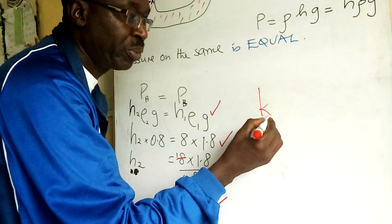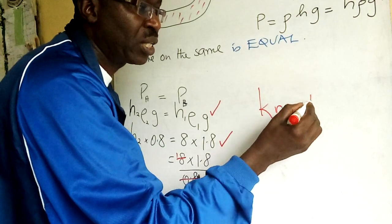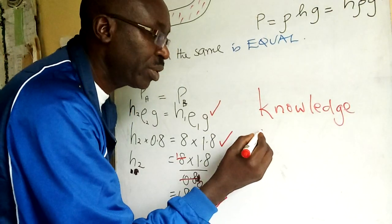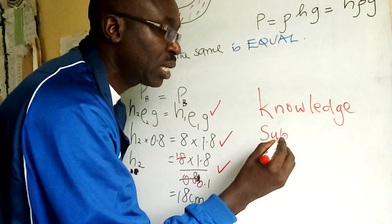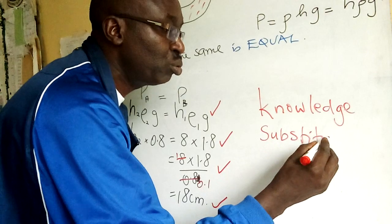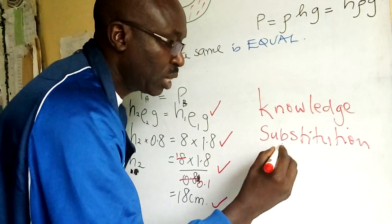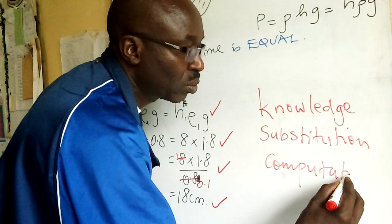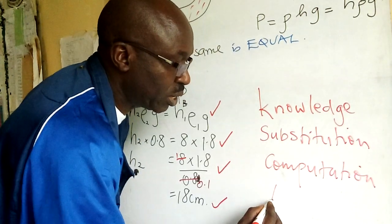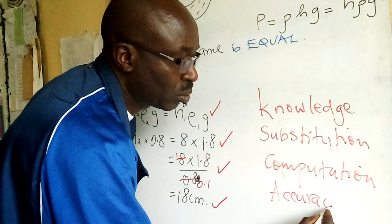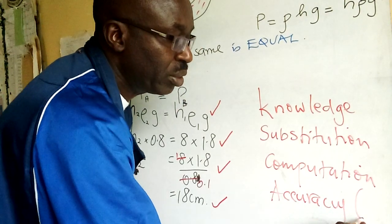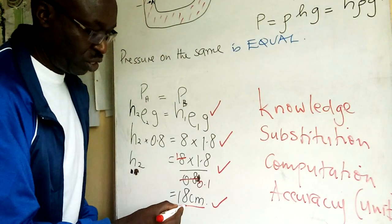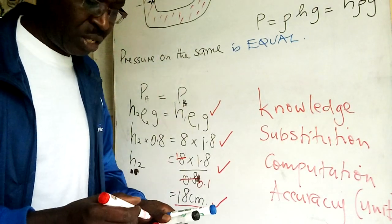So we come here, we write. You always must write the knowledge or formula. Then you come here and do some substitution. Then you do some computation, and then you get the answer. This accuracy must be okay with you. Units, you must write the correct units.